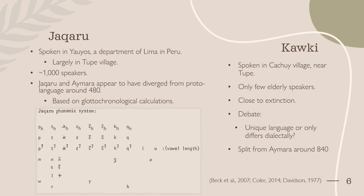Cacchi, on the other hand, is spoken in a nearby village called Cacchi. There are only a few elderly speakers, and it is widely regarded as either being close to extinction or already extinct, particularly as it is not being continued by the younger generation. There is also a debate around whether it can be considered its own unique language, or whether it is only dialectally different from Jacare. It is believed to have split from Aymara around the year 840.